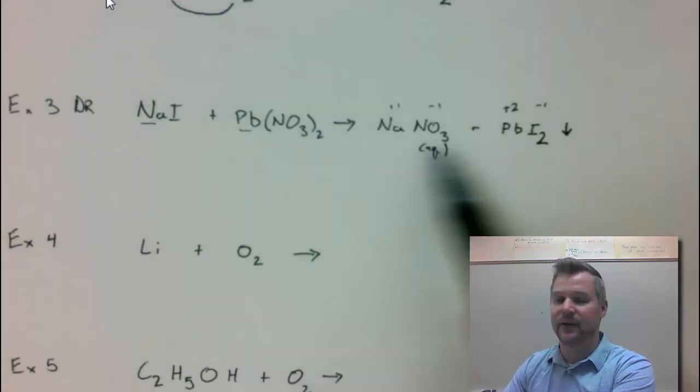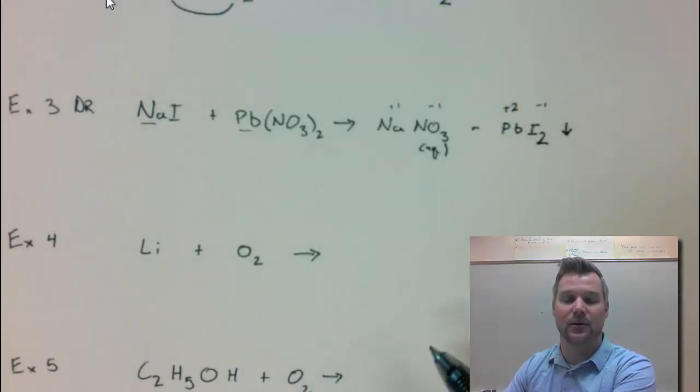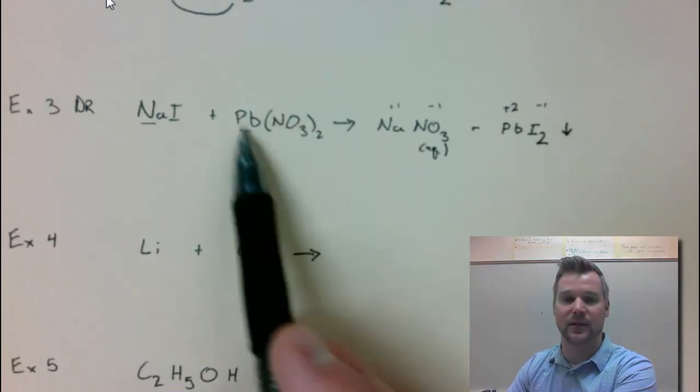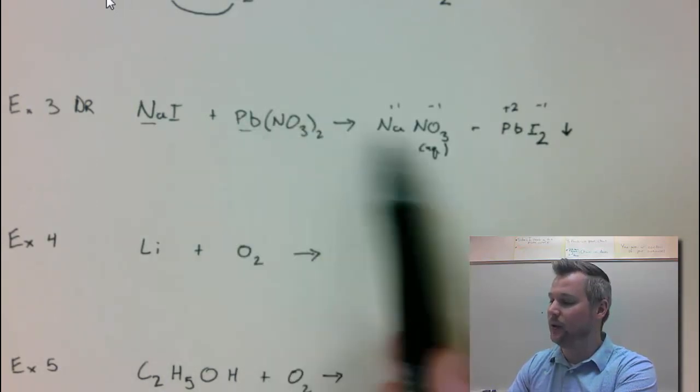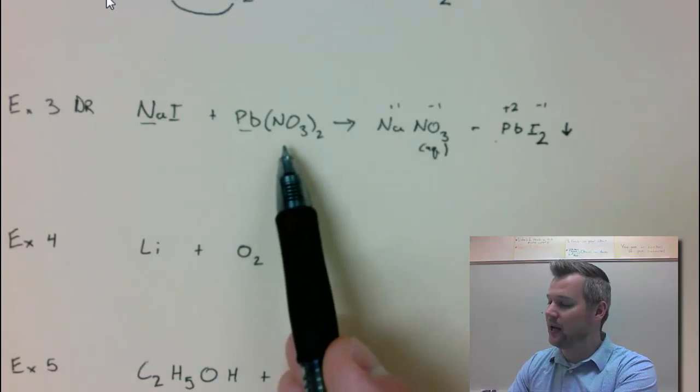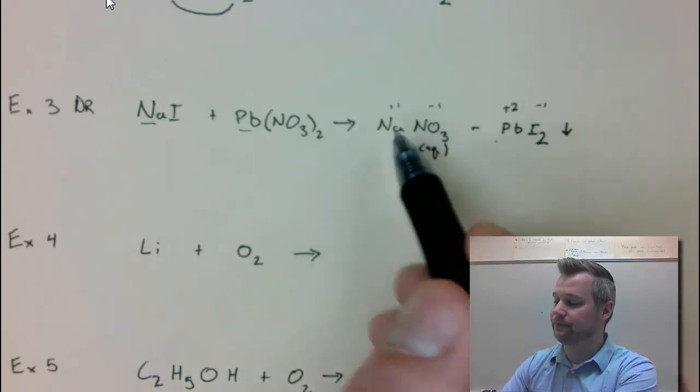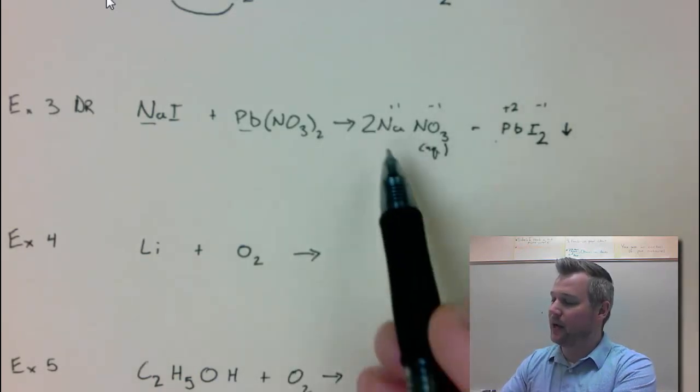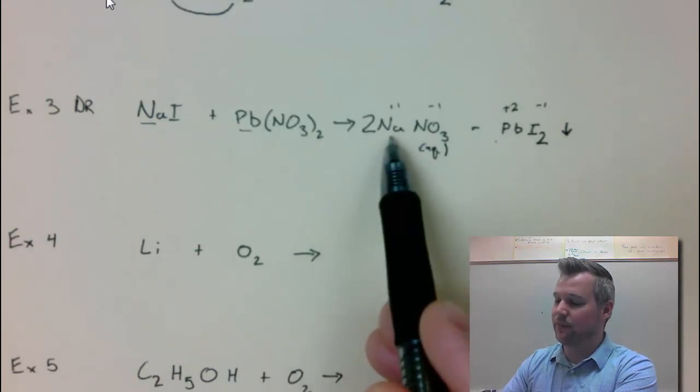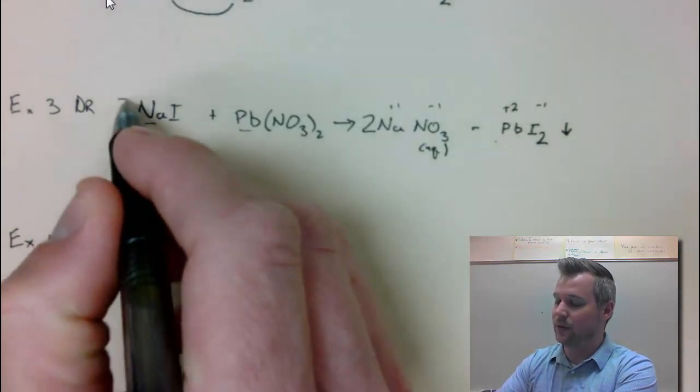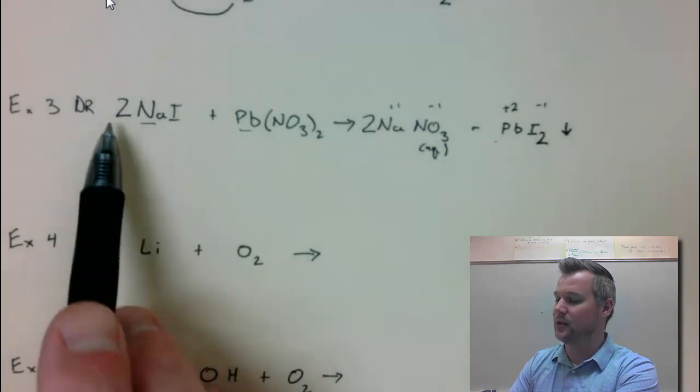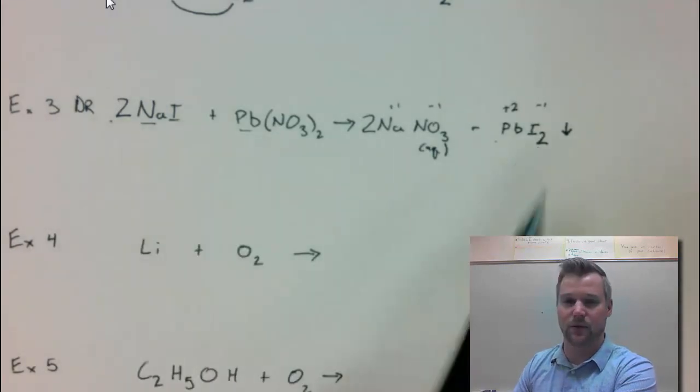Then I need to do step 4, look for elements. I don't have any elements. I only have compounds here. So then step 5, I need to look for balancing this thing. My most difficult looking formula, I would say, is right here. 1 lead, 1 lead, you're good to go. I have 2 nitrates, so I need to multiply by 2. Then I have a 2 in front of sodium, so I need to put a 2 in front of sodium right here. And then I need 2 iodides. I already have 2 iodides, so we're good to go.